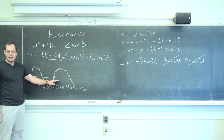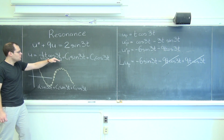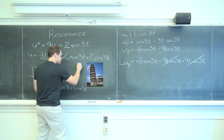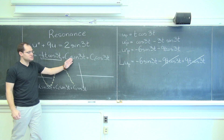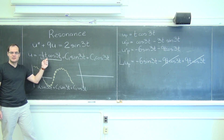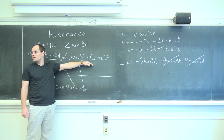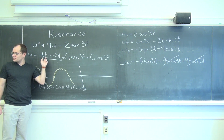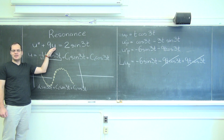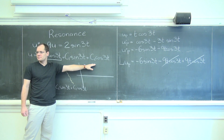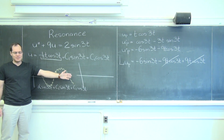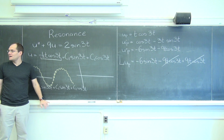Now, when the drive is resonant — when the drive frequency matches the natural frequency — let's think about what the solution looks like. The general solution is on the board, and you quickly realize that the t times cosine 3t term will come to dominate the whole solution. The sines and cosines stay between minus one and one, but this term grows uncontrollably. So even if we start with the spring completely at rest — no displacement, no velocity — the solution will look like a cosine that grows in amplitude at the rate of t.